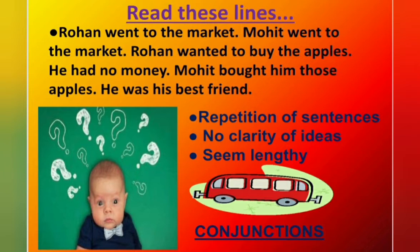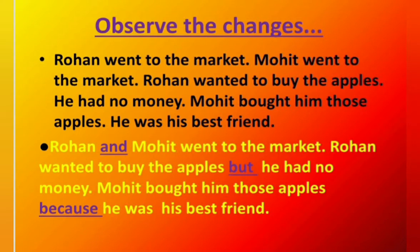So, which magic words should we use to avoid this repetition and to connect the rest of the sentences also? Let's read these highlighted sentences. Rohan and Mohit went to the market. Rohan wanted to buy the apples but he had no money. Mohit bought him those apples because he was his best friend. So, you must have observed that after using these magic words, there is no repetition of sentences and there is more clarity of ideas also. So, these underlined magic words — and, but, and because — are conjunctions.